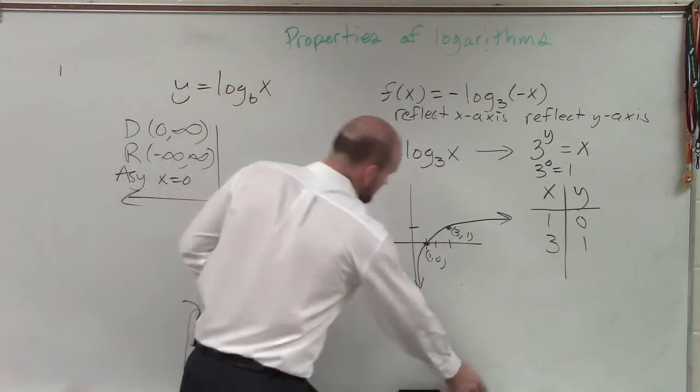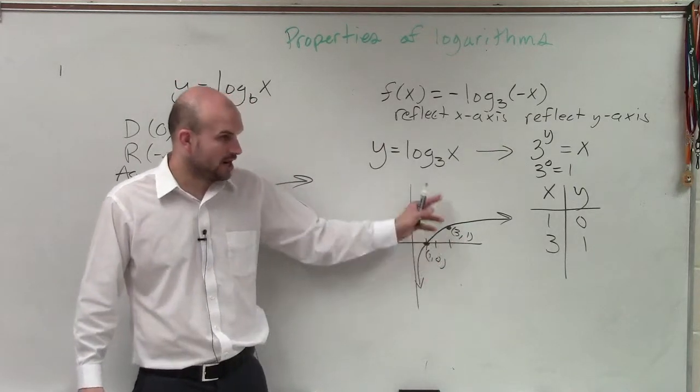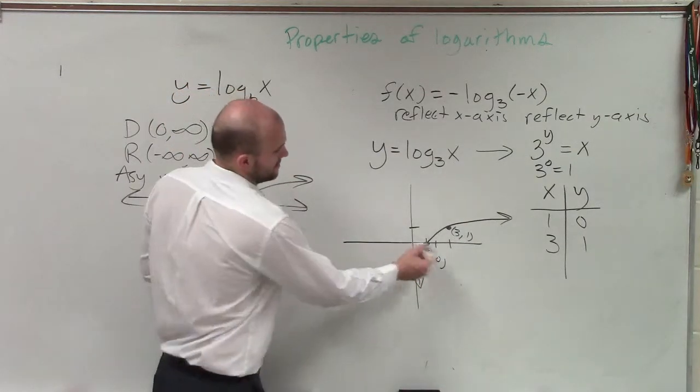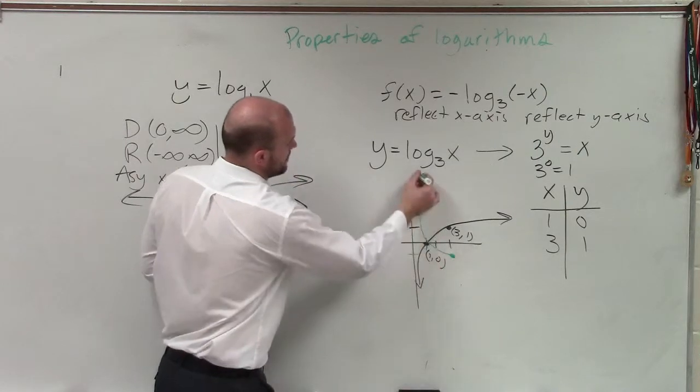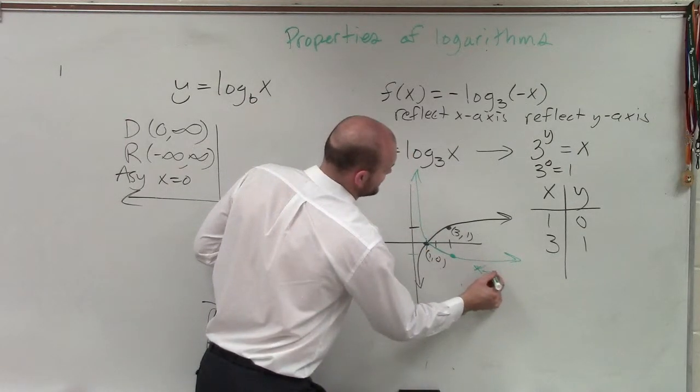If I'm reflecting over the x-axis, instead of going over 3 up 1, I'm going to go over 3 down 1. All right? So now the graph looks like that. So that's the x-axis reflection.